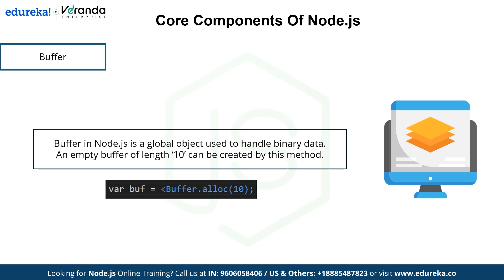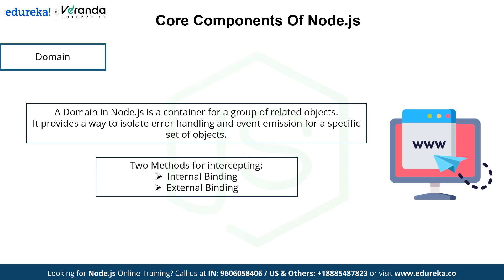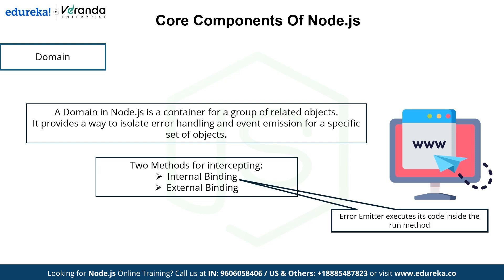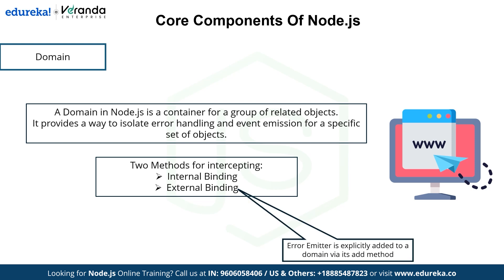The next component is domain. It is essentially a container that groups related objects in Node.js, allowing you to isolate error handling and ensure events are well managed for a specific set of objects. There are two methods for intercepting errors within the domain: internal binding, where the error emitter runs its code inside the error method of the domain, and external binding, where the error emitter is explicitly added to the domain using the add method.